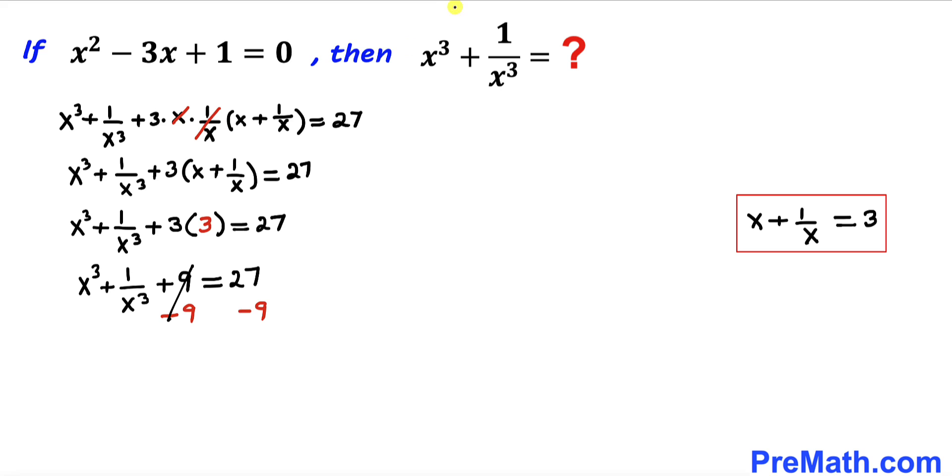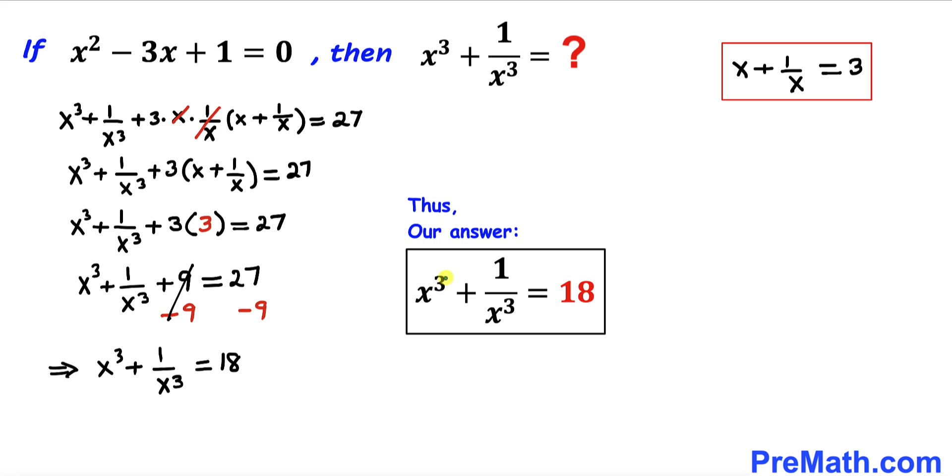This is gone. So therefore our x power 3 plus 1 divided by x power 3 value turns out to be 18 on the right hand side. Thus our x cubed plus 1 divided by x cubed value turns out to be 18.